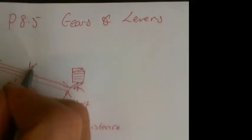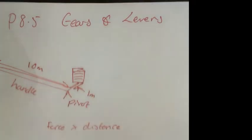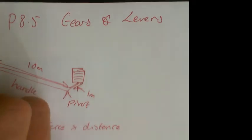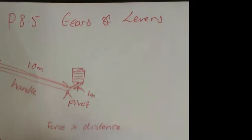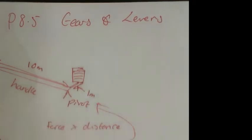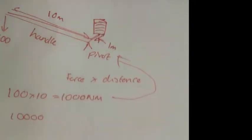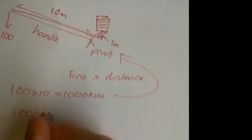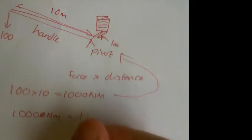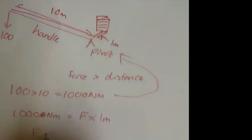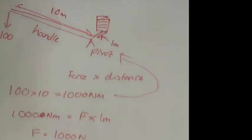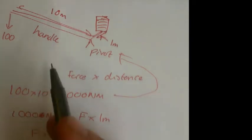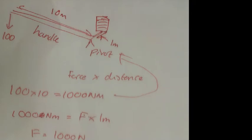If this handle here is 10 meters and this little bit here is 1 meter, and I put 100 newtons in here, then the moment is 100 times 10, which is 1000 newton meters. I'm going to get the same number of newton meters on the other side: 1000 newton meters equals the force times 1 meter, so the force is 1000 newtons. You can see the force is 10 times bigger because the distance is 10 times bigger — that's where the name force multiplier comes from.